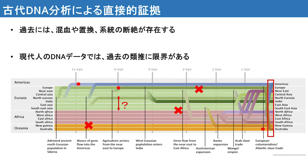これらの現代人を用いた研究によって各集団の系統関係が分かることに加えて、過去、世界中にどのように拡散し各地域集団がどのように交流、つまり混血を経て成立したのかが大まかに明らかになってきました。しかしながら、現在の集団のDNAを用いた研究には限界があることも分かってきました。過去に生じた混血はある程度推定できるかもしれませんが、集団の置換また系統の断裂が起きた場合には現代人のデータから類推することは困難となります。